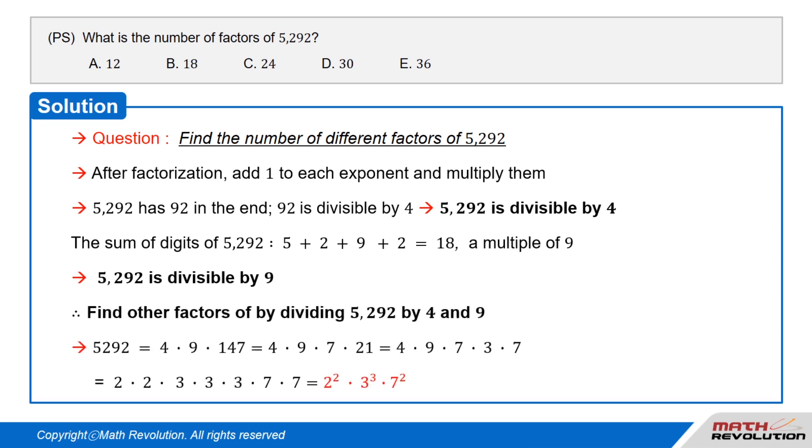So, we can find other factors by dividing 5,292 by 4 and 9. Then, we get 5,292 equals 4 times 9 times 147 equals 4 times 9 times 7 times 21 equals 4 times 9 times 7 times 3 times 7.